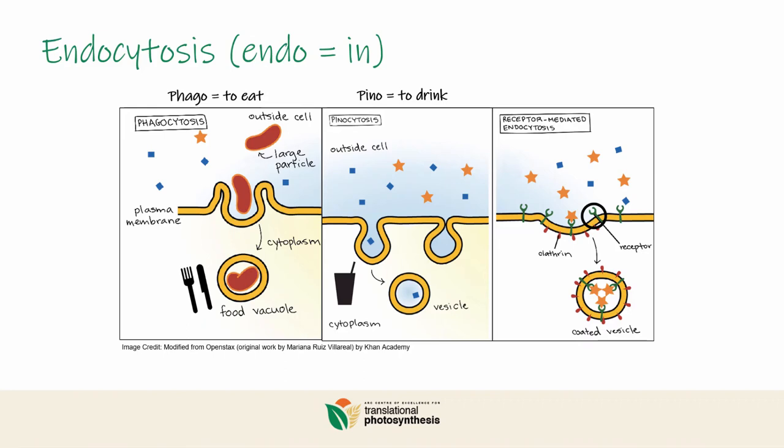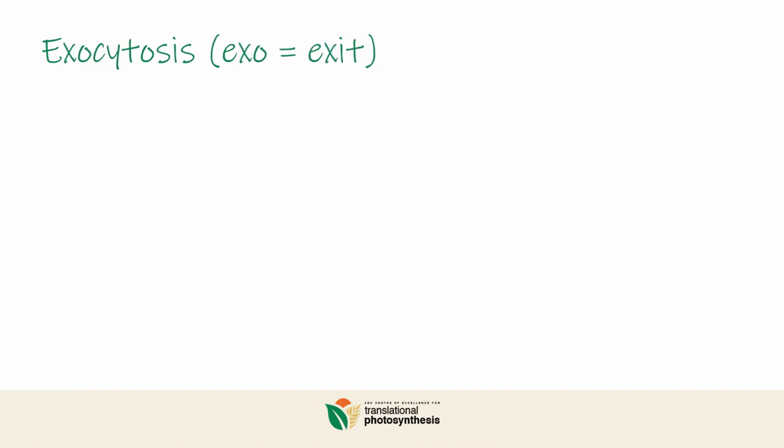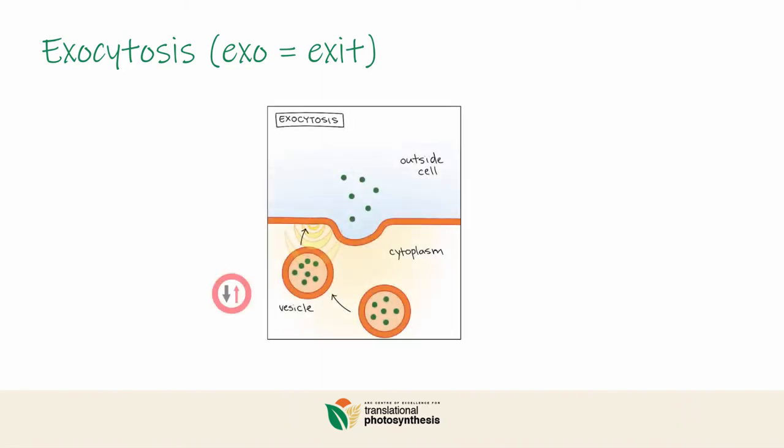But that's not the only type of bulk transport a cell can perform. In fact, the reverse direction is also possible, and it is called exocytosis, where exo means exit or external. In exocytosis, the vesicle, instead of moving towards the inside, is moving towards the outside of the cell until it fuses with the membrane and releases its content on the outside.